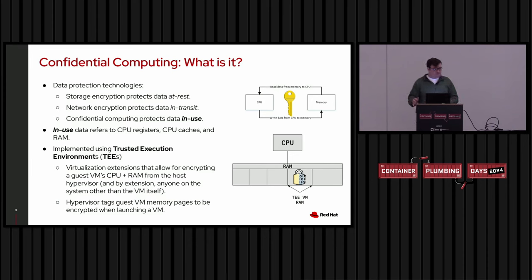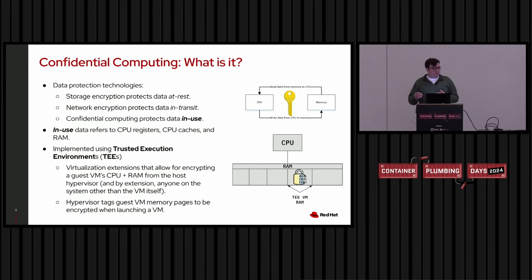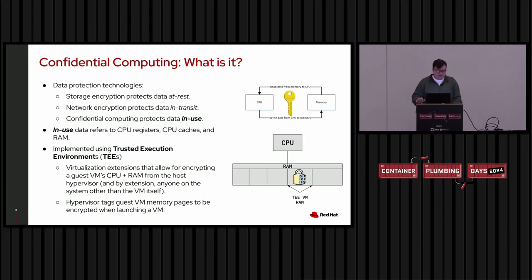An introduction to confidential computing: if you think about data protection technologies, we have storage encryption which protects data at rest, network encryption which protects data in transit, and confidential computing which protects data in use — meaning the CPU registers, caches, and RAM that the application uses. This is implemented using trusted execution environments, which are a virtualization extension to the CPU that allows for encrypting a guest VM's CPU and RAM from the host hypervisor — so not even someone with hypervisor privileges can read that memory.